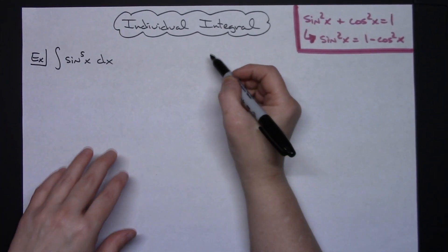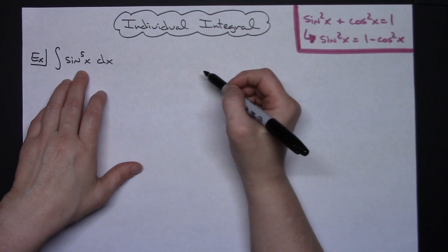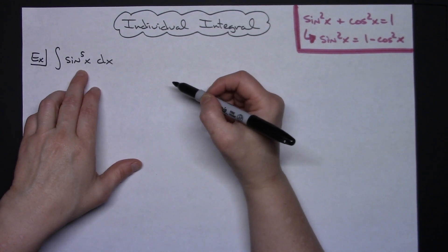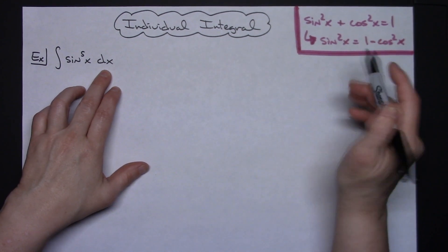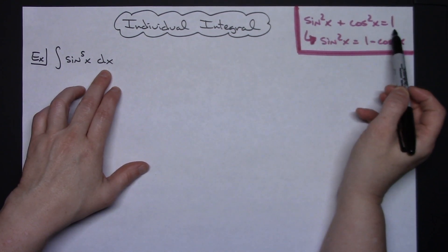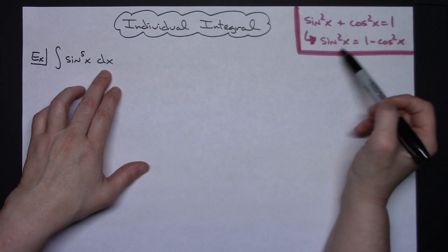In this video I'm going to be working out an individual integral. We're going to be taking a look at the integral of sine x to the fifth power dx. We will be using the common Pythagorean identity of sine squared x plus cosine squared x equals one.